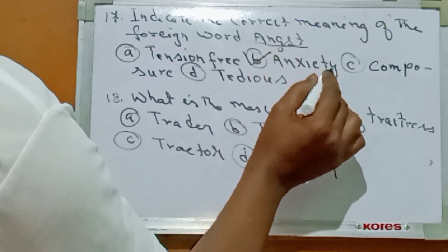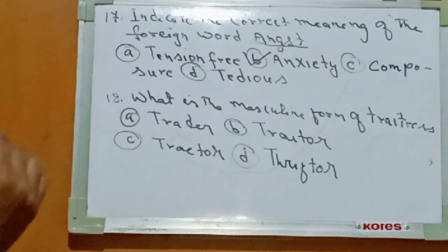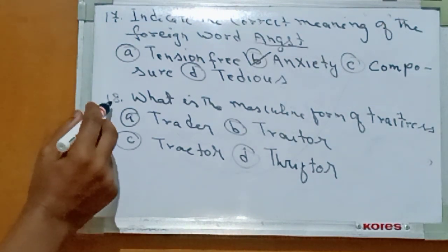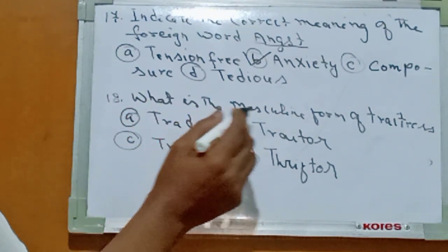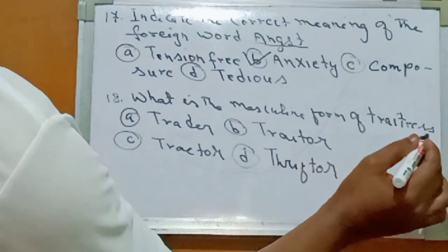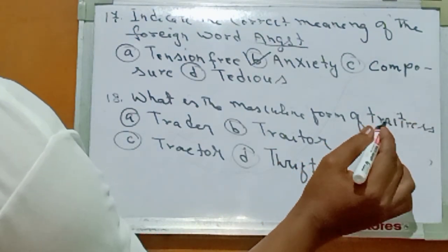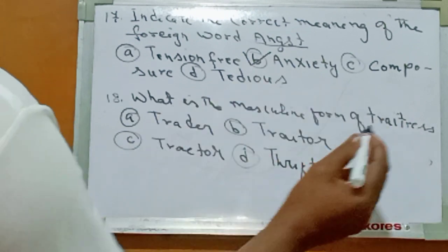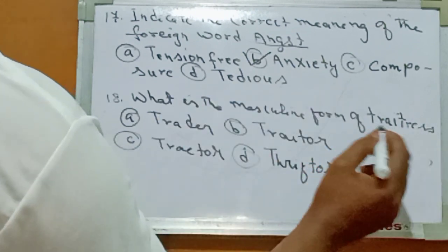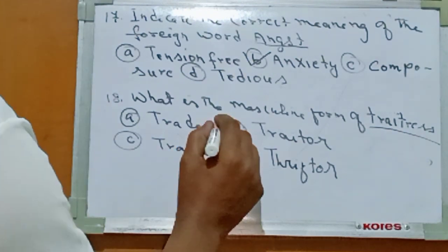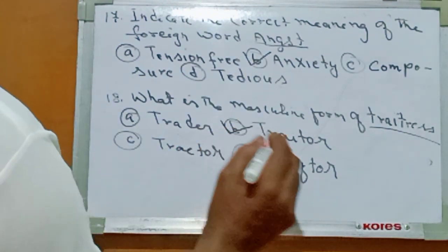Number eighteen: what is the masculine form of traittresse? T-R-A-I-T-R-E-S-S-E. The answer is Option B: traitor.